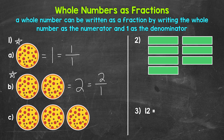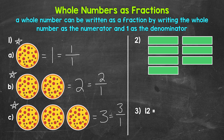And then for C, we have three pizzas — three wholes. So we need to write this as a fraction. Each pizza is just one part, so one is our denominator. And we have three wholes, so three is our numerator. We have three wholes and each is divided into one part. So our fraction is three over one.